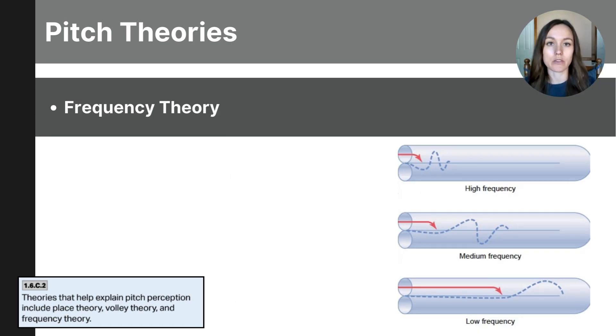The frequency theory proposes that the rate at which a neuron fires its signals matches the frequency of the sound wave. So for low frequency sounds, the entire basilar membrane vibrates in sync with the sound wave causing the neurons to fire at a rate that matches the frequency of the sound. For example, if a sound wave has a frequency of 200 hertz, the auditory nerve fibers would fire at 200 times per second. So imagine neurons in your ear like drummers. When a low-pitched sound comes in, the neurons or the drummers beat slowly. When a high-pitched sound comes in, they beat quickly. The brain counts these beats and figures out the pitch based on the speed of the drumming or the neurons firing. So to summarize the frequency theory, the rate of neural firing matches the frequency of the sound wave and this is how the brain interprets the pitch.